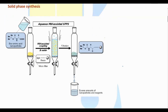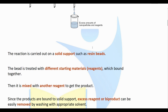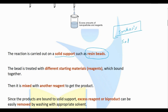Solid-phase synthesis is a type of synthesis. What is the solid phase? They are basically resin beads — a solid support using resin beads. So there is a solid support, and this solid support is used in synthesis.